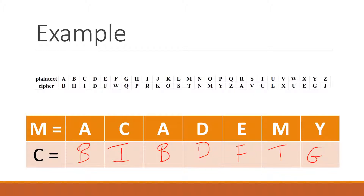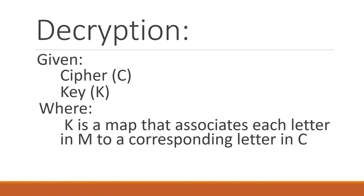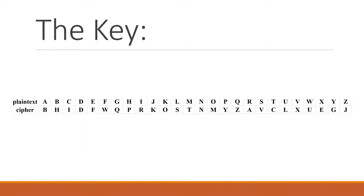So there it is — we found the ciphertext. Let's now take a look at decryption. Decryption is just undoing the encryption. So if we're given the ciphertext c and the key k, where again the key is just a map that associates each letter in m to a corresponding letter in c, the way that we're going to decrypt is to look at letters in the ciphertext and map those to letters in the plaintext.